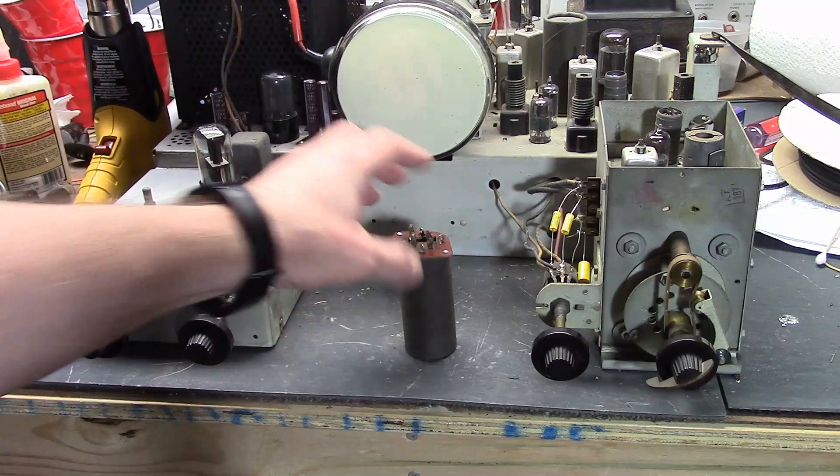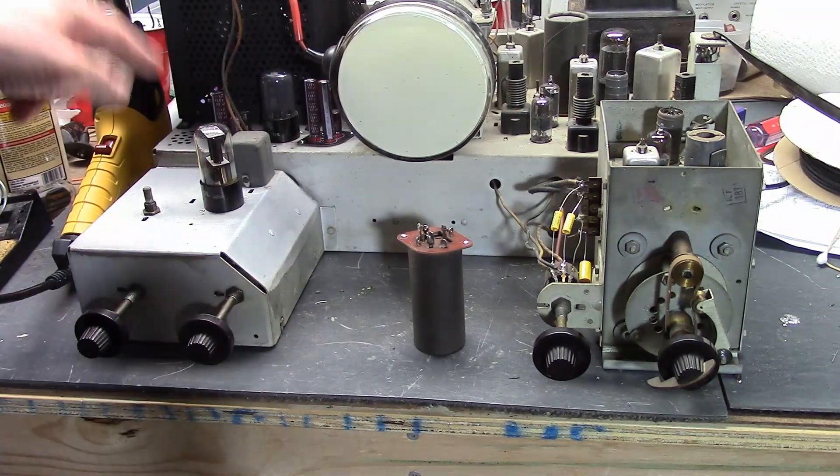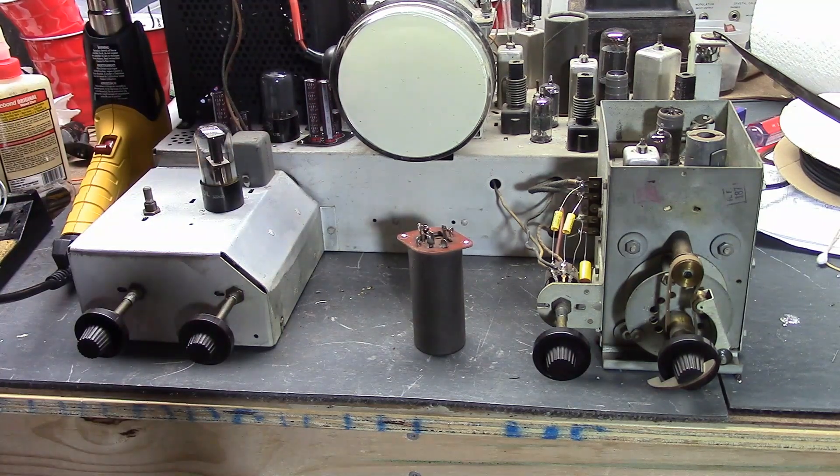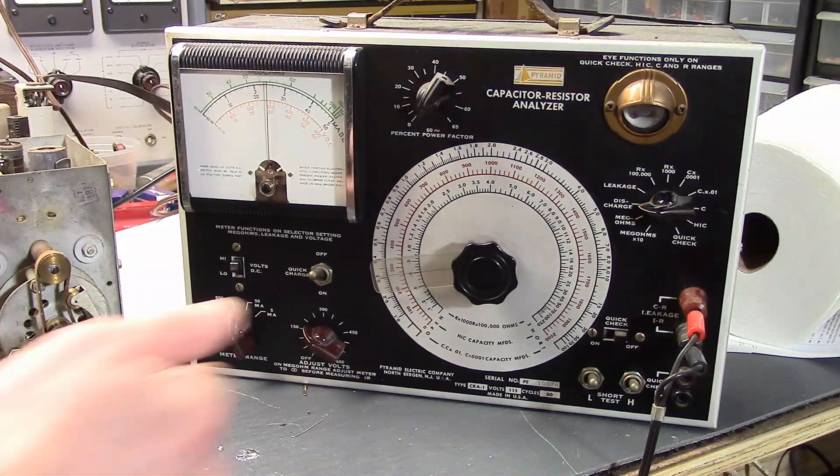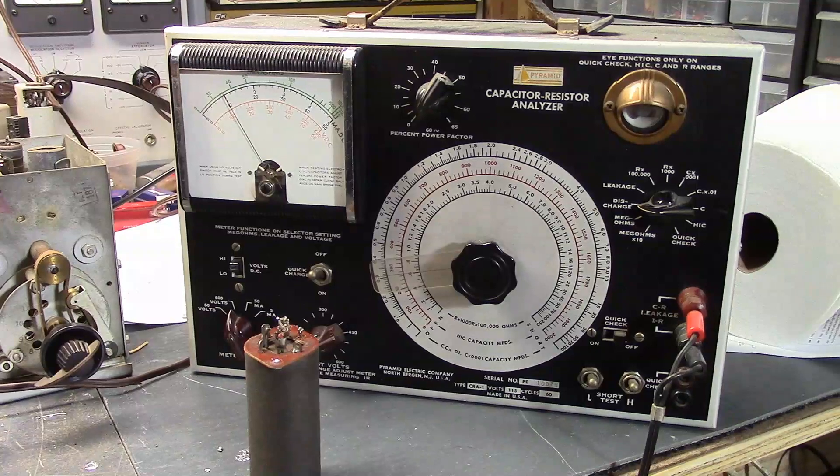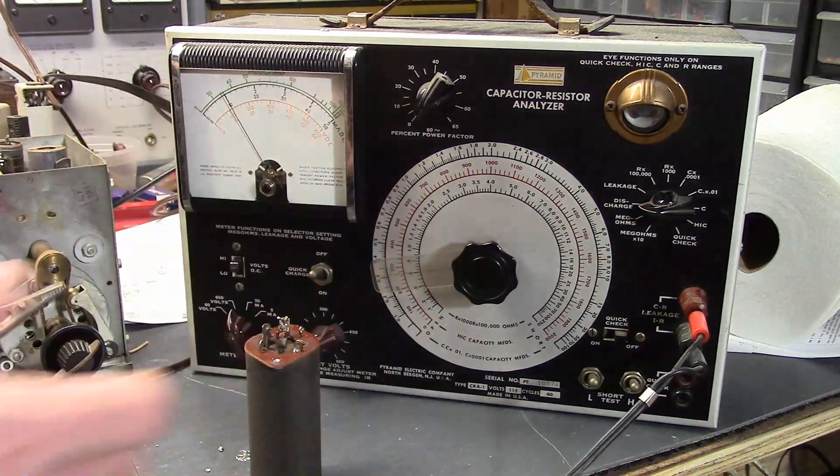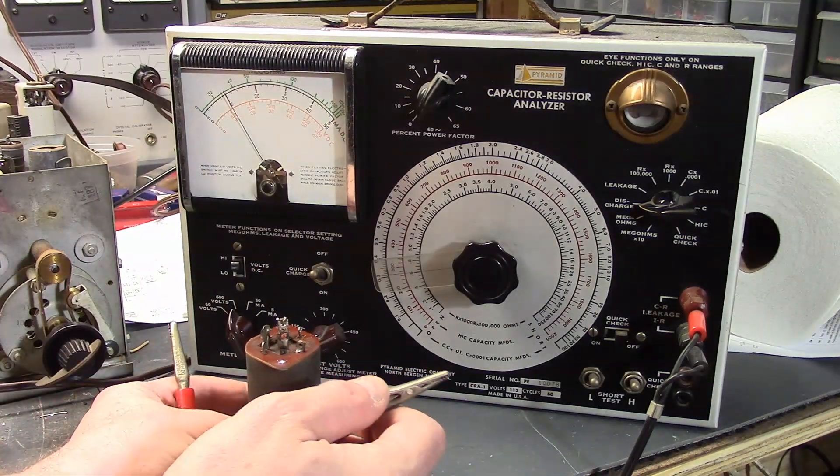I also want to check this cap and see if it's leaky, as is the other one that I've replaced. I still have two more multi-section caps to go. Let's try out the Pyramid CRA-1, haven't used that in a while. All three sections are supposed to be good for 450 volts. I have this in the discharge position, so I'm not going to get shocked when I grab these leads here.